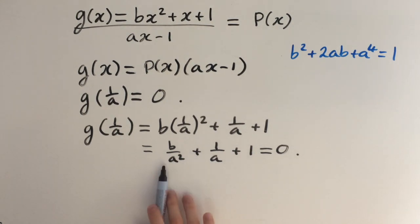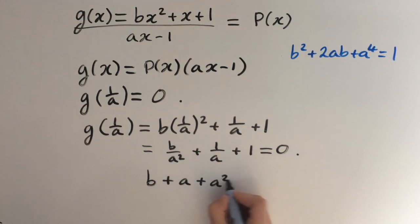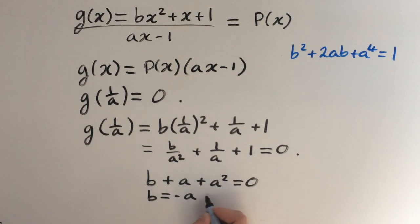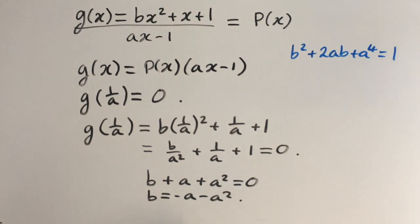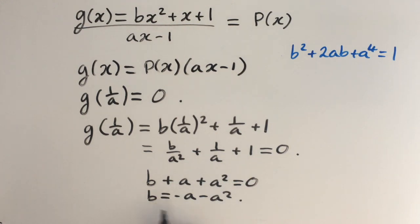So g of 1 over a equals b times 1 over a squared, plus 1 over a, plus 1. We can simplify this as b over a squared plus 1 over a plus 1, and we know this equals 0. Now I'm going to multiply this equation by a squared, and we're going to be left with b plus a plus a squared equals 0. Rearranging for b, we get b equals minus a minus a squared. This is the second equation we'll use alongside the first to solve for a and b simultaneously.